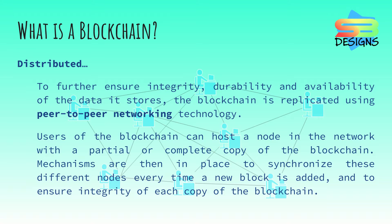Users of the blockchain can host a node in the network with a partial or complete copy of the blockchain. Mechanisms are then in place to synchronize these different nodes every time a new block is added, and to ensure integrity of each copy of the blockchain.